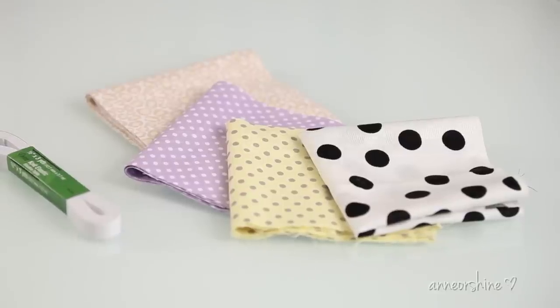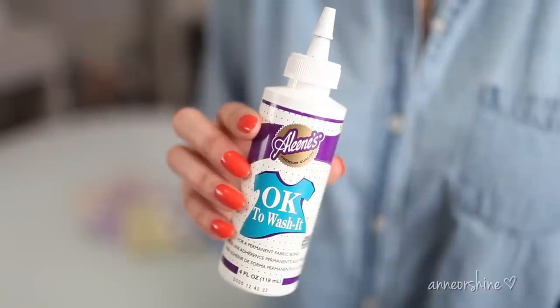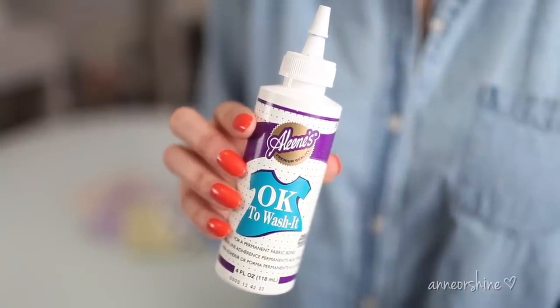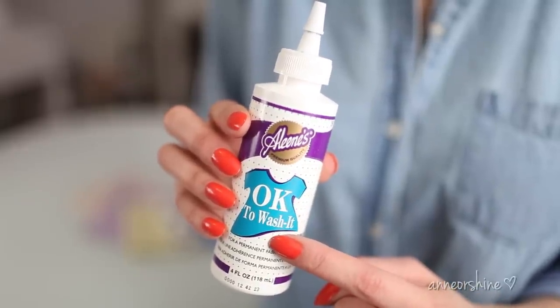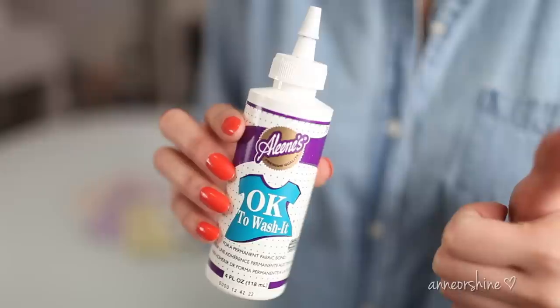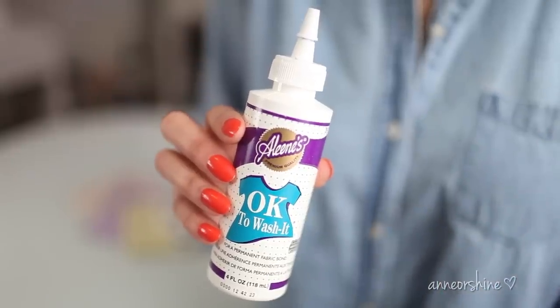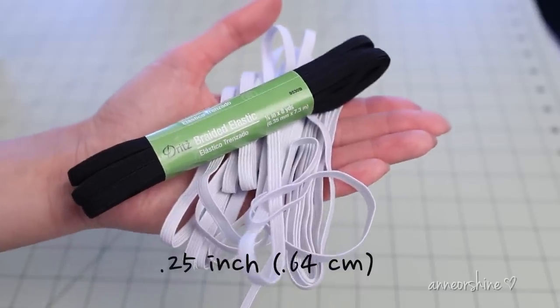When constructing the scrunchie, I prefer to sew. If you don't own a sewing machine, then I recommend this amazing glue. I just started using it and it's become one of my favorite glues. Once it's on, it's permanent and it's also washable. Lastly, you will need some elastic. I prefer to use the quarter inch elastic.